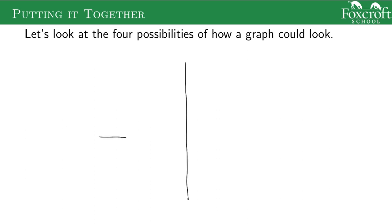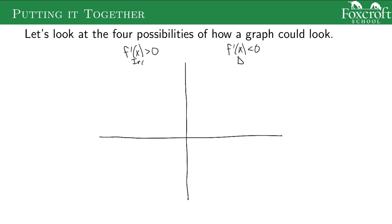Let's look at the four possibilities that can happen. The first derivative could be positive, meaning we're increasing, or negative, meaning we're decreasing. The same applies to our second derivative: it could be positive, which means we're concave up, or negative, which means we're concave down. So there are two possibilities for the first derivative and two for the second derivative, giving us four different shapes total.